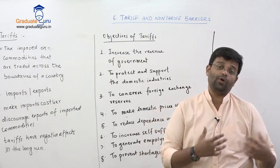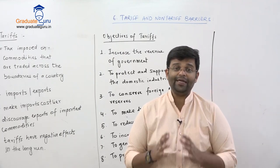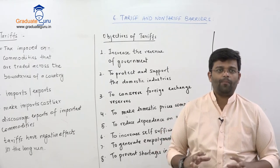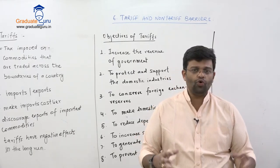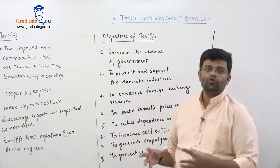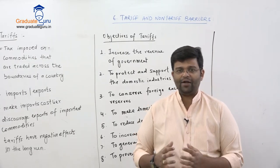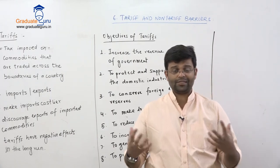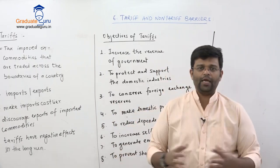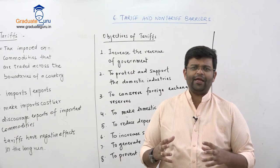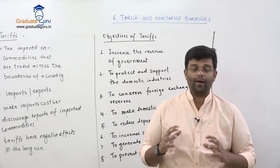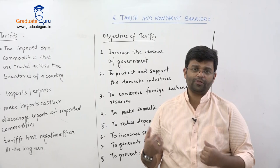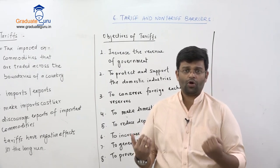This protectionist policy continued until 1991. Only in 1991, when we were facing a very severe balance of payments crisis and had no money left, were restrictions imposed on us. We had to open up our economy and move from protectionism towards liberalization. That is how we understand liberalization, privatization, and globalization. Every country faces a different situation, and based on that, it must adopt certain protectionist or liberal measures.